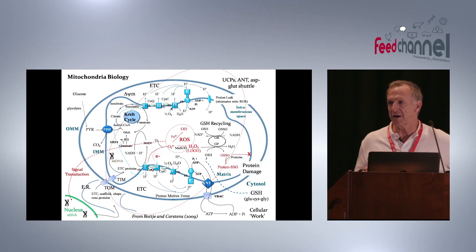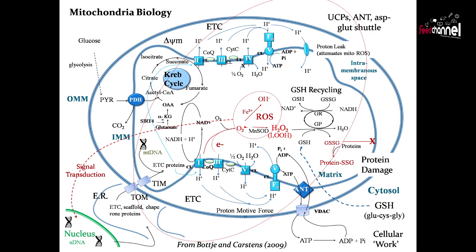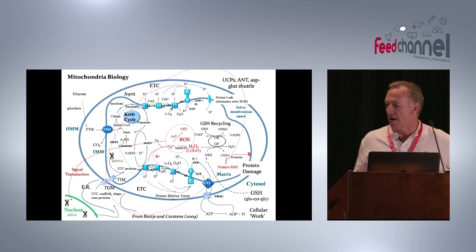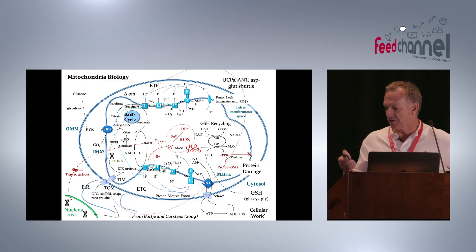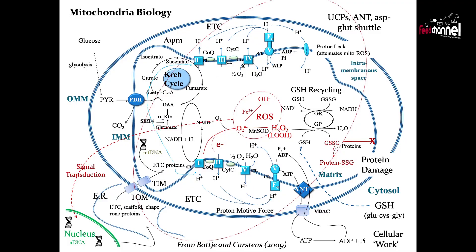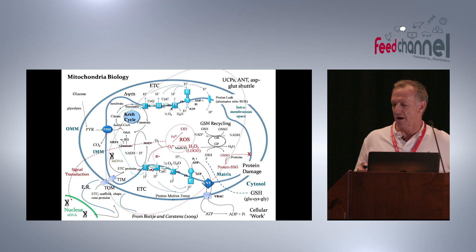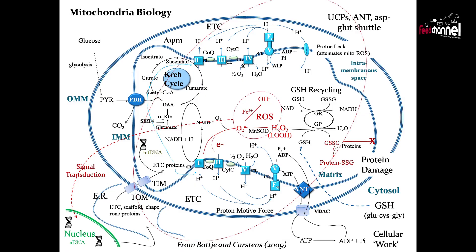One thing that also goes on in mitochondria is proton leak, which dissipates the membrane potential. A higher membrane potential results in higher ROS production. Proton leak is a self-limiting system within the mitochondria to lower the amount of electrons leaking out. If oxidation continues, you can have formation of oxidized glutathione (GSSG), protein disulfides, and protein damage. Reactive oxygen species — especially hydroxyl radical — can damage anything they contact. You can also get signal transduction: modulation of gene expression through ROS production.